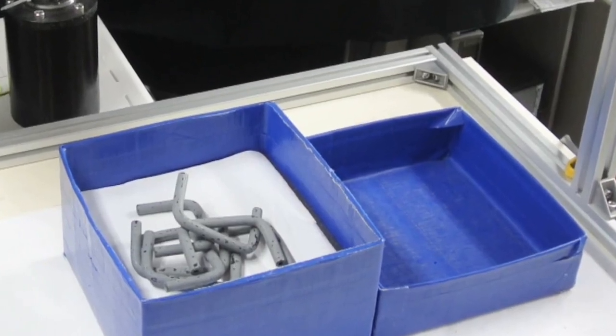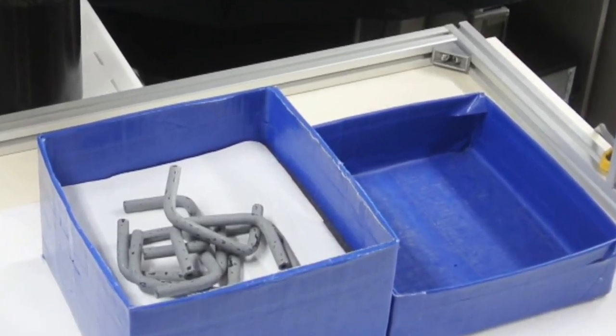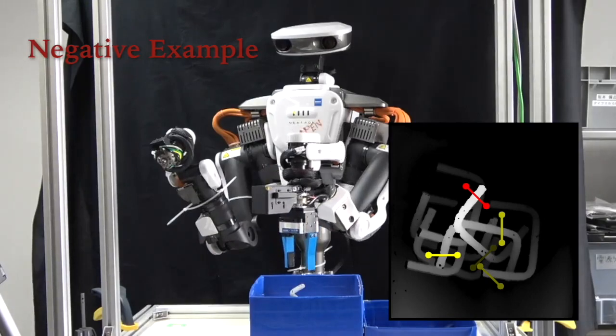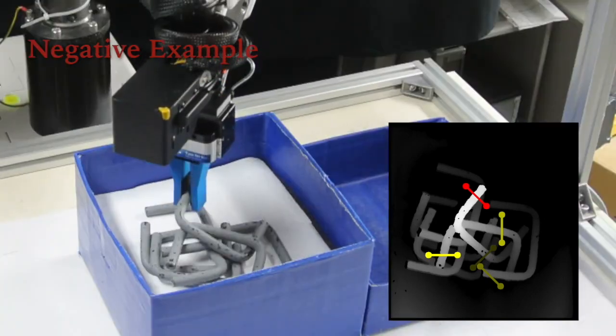The robot must carefully choose grasp positions to avoid the target object entangled with others. If the robot selects the grasp marked as red, then grasp fails since the robot picked multiple entangled objects.